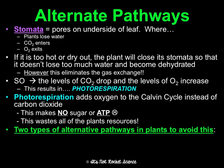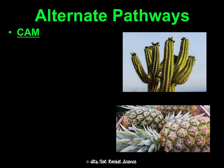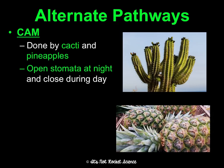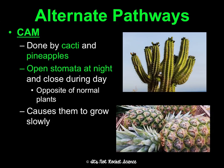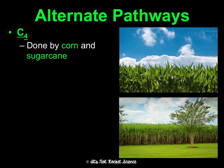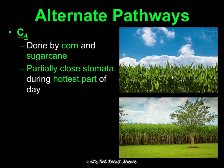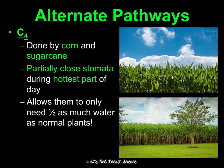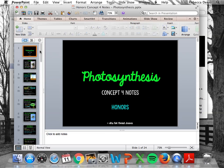To avoid photorespiration, some plants use two alternative pathways. The CAM pathway, used by cacti and pineapples, has plants open their stomata only at night and keep them closed during the day to retain water — the opposite of normal plants. This causes slow growth but prevents dehydration and photorespiration. The C4 pathway, used by corn and sugar cane, involves only partially closing stomata during the hottest part of the day. These plants need about half as much water as normal plants, preventing dehydration and photorespiration. And that is photosynthesis.